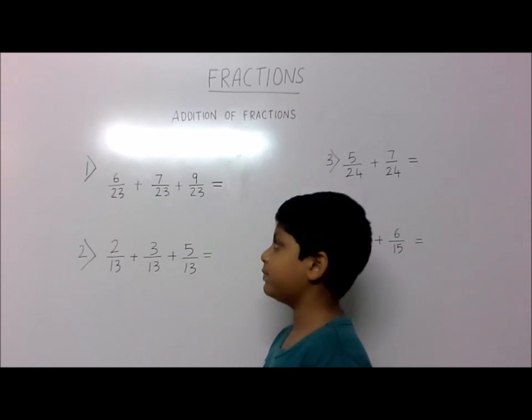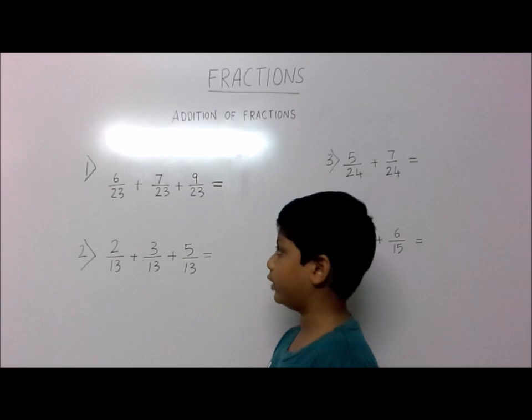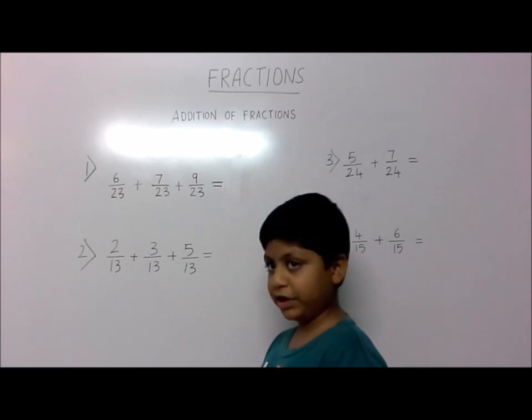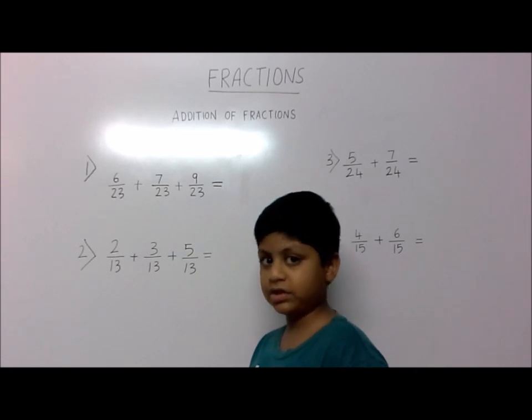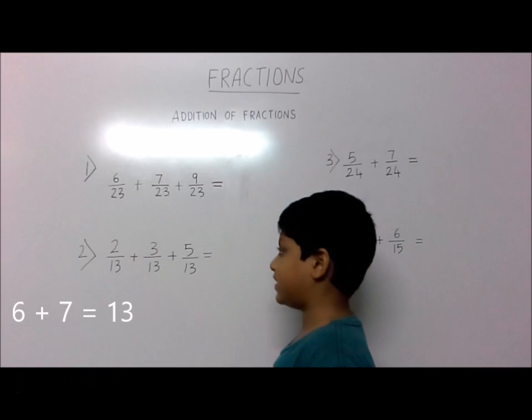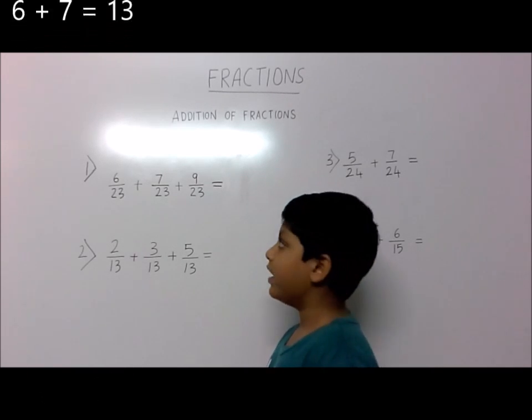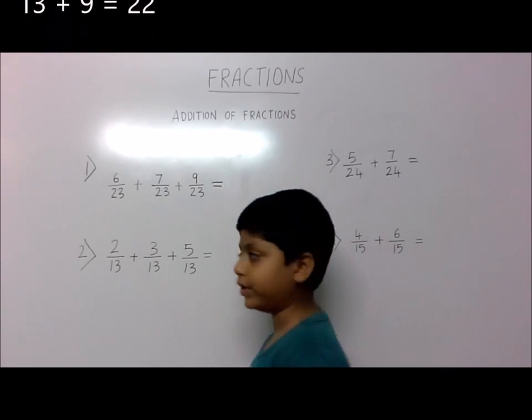First question: 6 by 23 plus 7 by 23 plus 9 by 23. Since all the denominators are the same, we don't have to do anything with the denominators. Just add all the numerators. 6 plus 7 is 13, and 13 plus 9 is 22. So the answer is 22 by 23.